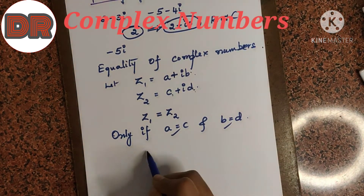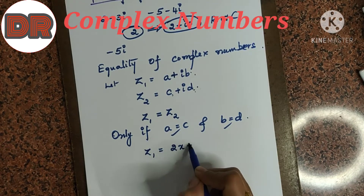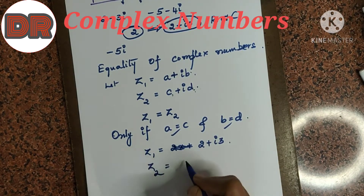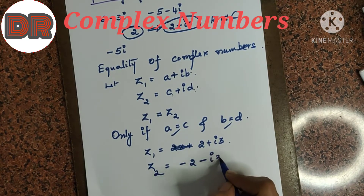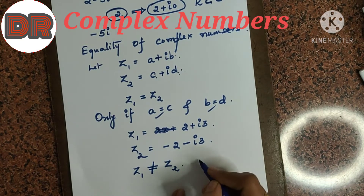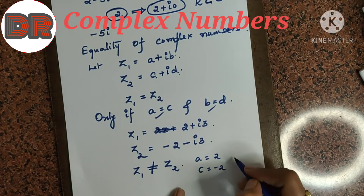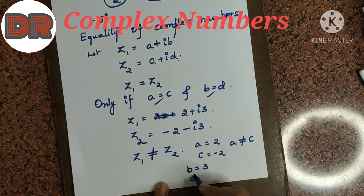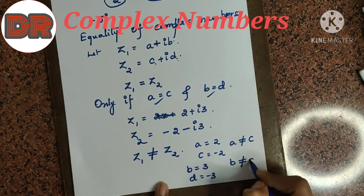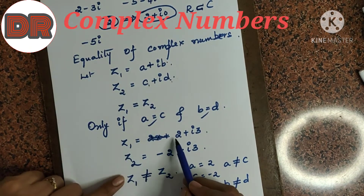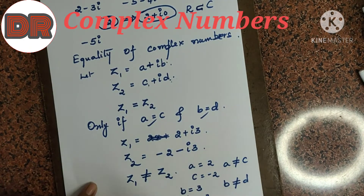Let me take a few examples. If z1 equals 2 plus i3 and z2 equals minus 2 minus i3, these two complex numbers are not equal. Here a is 2 and c is minus 2, so a is not equal to c — the real parts are not equal. Also b is 3 and d is minus 3, so b is not equal to d. For them to be equal, z2 would also need to be 2 plus i3.